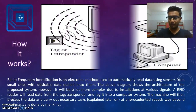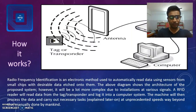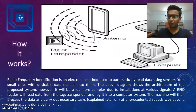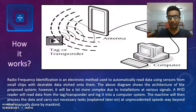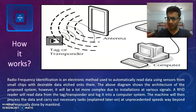So, how does this work? As you all know, RFID — also known as Radio Frequency Identification — is an electronic method used to automatically read data using sensors from small chips which have desirable data etched onto them. The above diagram shows the architecture of the proposed system; however, in reality, it will be a lot more complex due to installations at various signals.